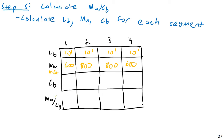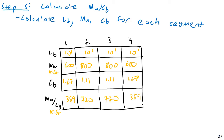Dividing M_u by C_b, we get 359, 720, 720, and 359 kip-feet. So we see that the middle segments — with higher absolute moment but lower C_b — actually produce the highest M_u/C_b ratio of 720. The outer segments, despite having higher C_b, yield only 359. This identifies the critical segments for lateral torsional buckling.